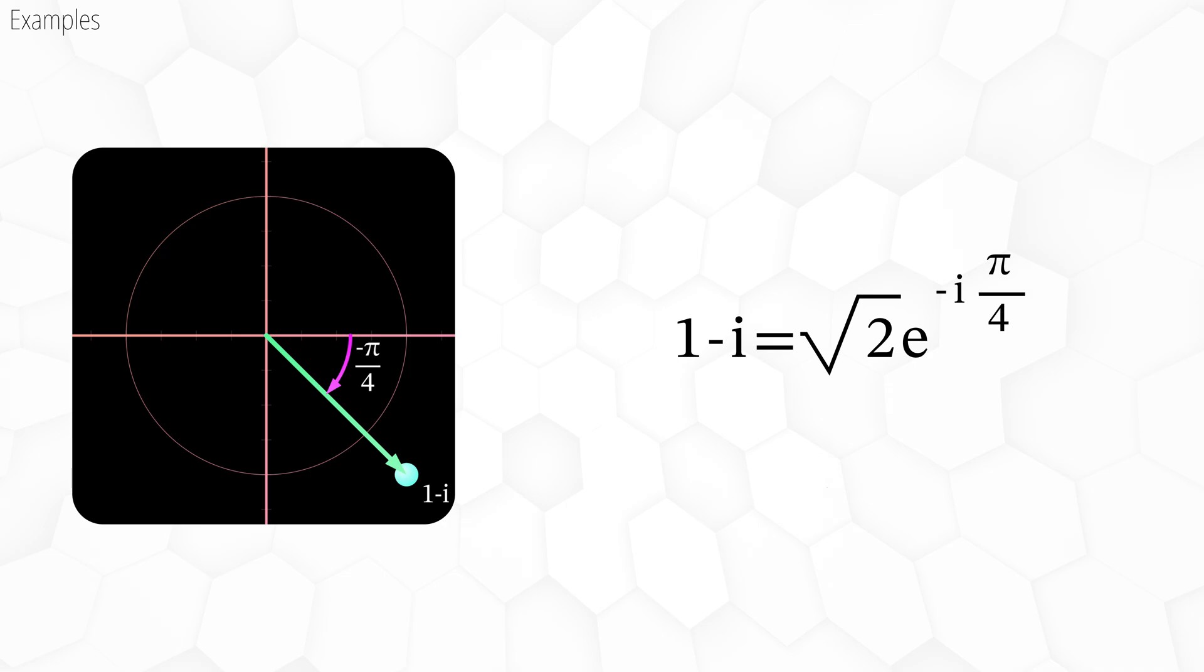Of course I'm choosing numbers here that have an exact conversion. Normally that isn't the case and the conversions can look quite ugly. But don't worry, in most applications we just always work in the most convenient form. In physics this is pretty much always the polar form, because it gives us a nice separation between the magnitude and the angle.